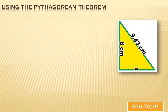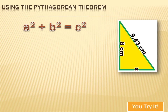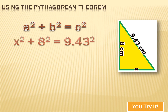This one's a little bit different. We're told the length of the hypotenuse, and we're told the length of one side of the right triangle, and we're asked to determine the length of the other side. We can use the Pythagorean theorem: a squared plus b squared equals c squared. So x squared — the side we don't know — plus 8 squared, the side we do know, equals the square of the hypotenuse, or 9.43 squared.